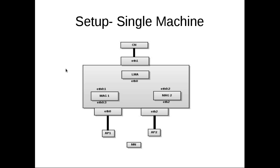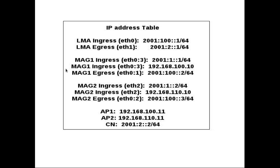Till now we have seen the PMIPv6-based IP flow mobility solution on a 3-machine setup. We have also implemented the same solution on a single machine setup. Here we can see that LMA, MAG1, and MAG2 are on a single Linux machine, and this machine has 3 Ethernet cards. The LMA communicates to MAGs internally, MAG1 communicates to AP1 using ETH0 interface, MAG2 communicates to AP2 using ETH2 interface, and LMA communicates to CN via H1 interface. Here is the list of IP addresses configured on the interfaces of the single machine setup.